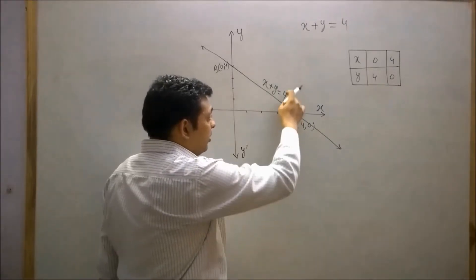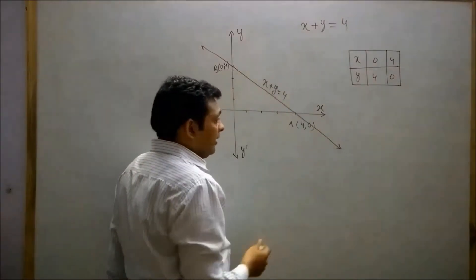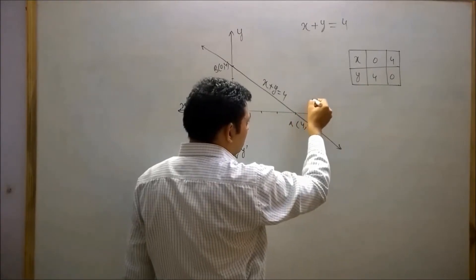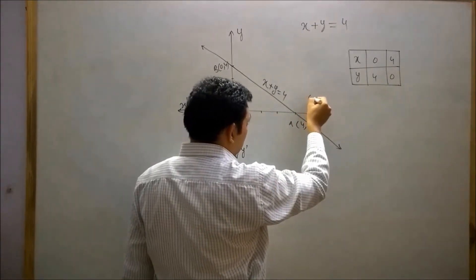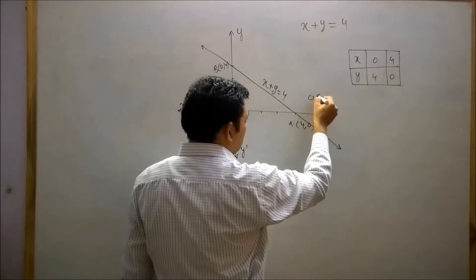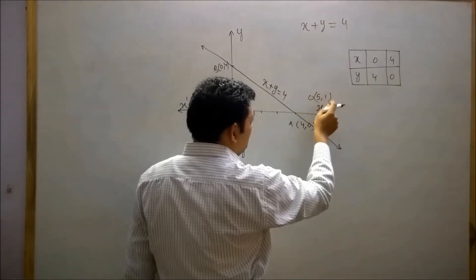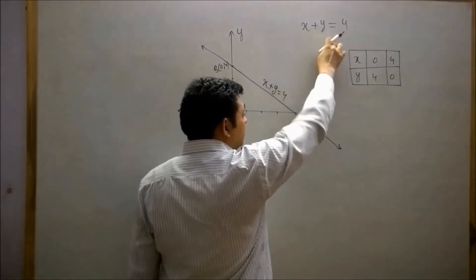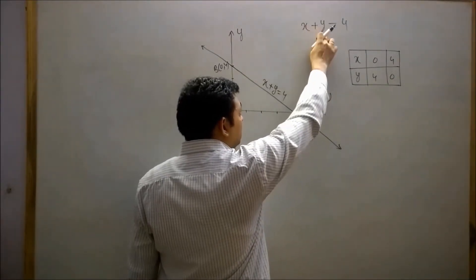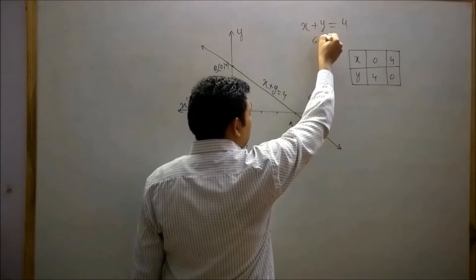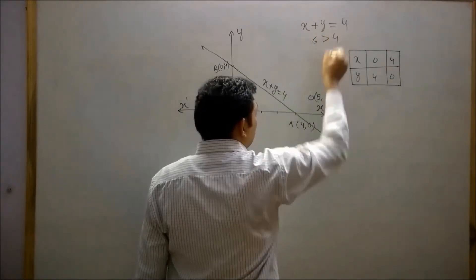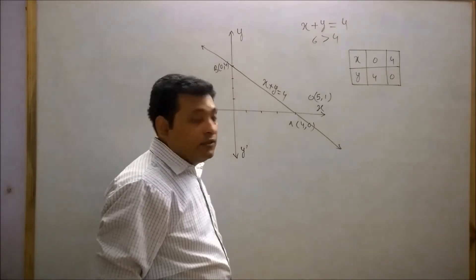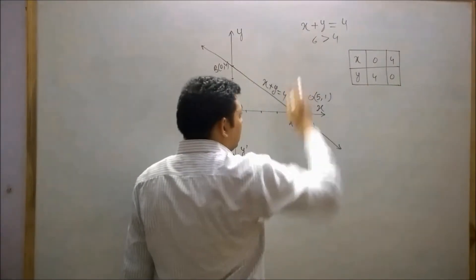Now pick any point to this side of the line. Suppose I have chosen the point (5, 1). Put x equals to 5 and y equals to 1 in this equation: 5 plus 1 equals 6. Since 6 is greater than 4, all these points on this side will make left hand side greater than right hand side.